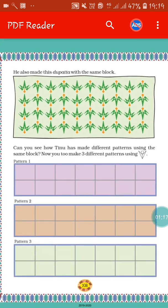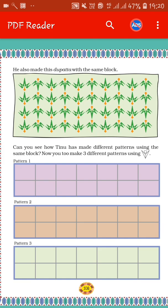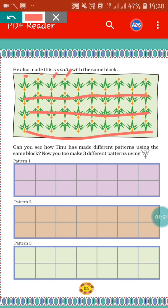Here you can also see Tino made this dupatta with the same block. The first block is arranged one way, but the second block is different from the first one. The third block is the same as the first one, and the fourth one is the same as the second one. In this way, all the blocks are in a pattern. You can see how Tino has made different patterns using the same block.